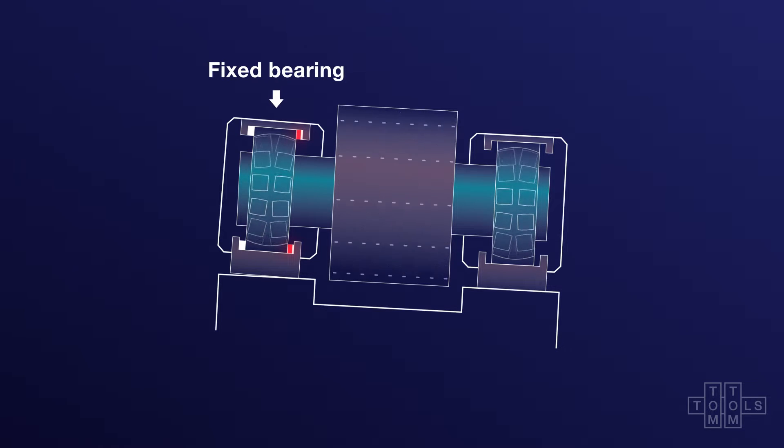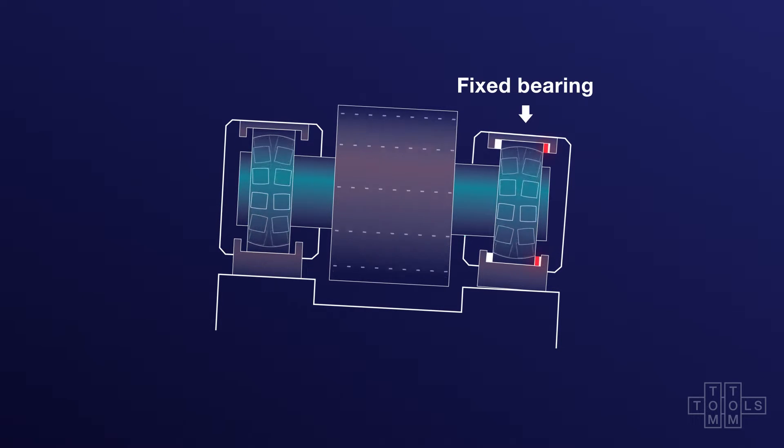If the uphill bearing is fixed, the upper bearing carries the thrust load. If the downhill bearing is fixed, the lower bearing carries the thrust load.